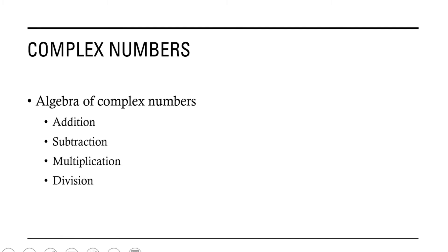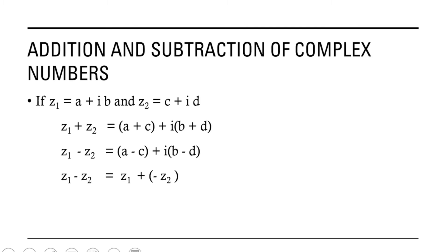First let us see what is addition of two complex numbers. Let us consider two complex numbers z1 and z2. If z1 is equal to a plus ib and z2 is equal to c plus id, then z1 plus z2 is equal to a plus c plus i into b plus d. That is, when we add two complex numbers we add the real parts and write them separately, then plus i into the sum of the imaginary parts.